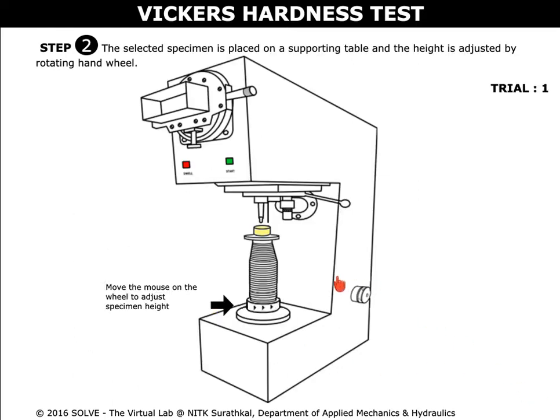Once the specimen is placed in the supporting table, adjust the height by moving the pointer on the wheel.